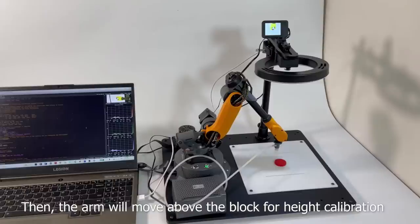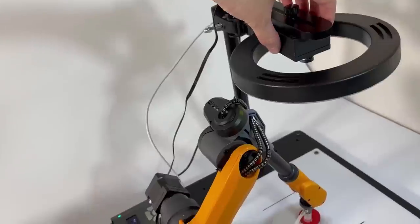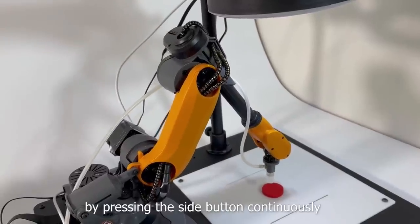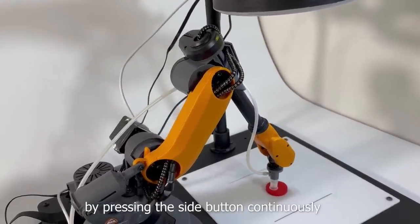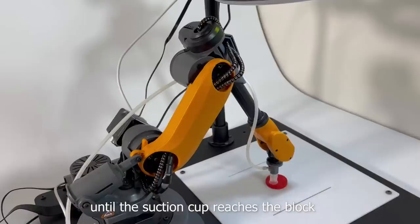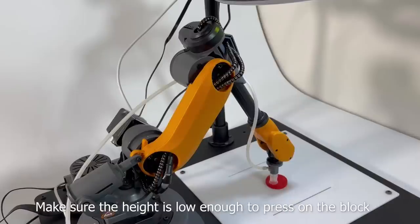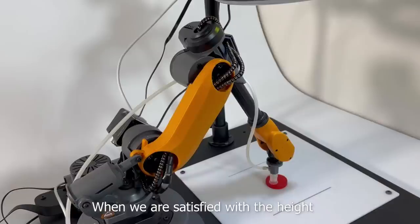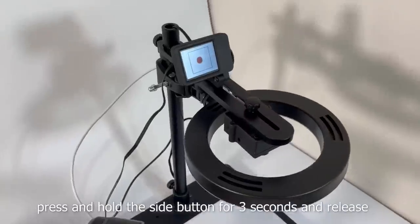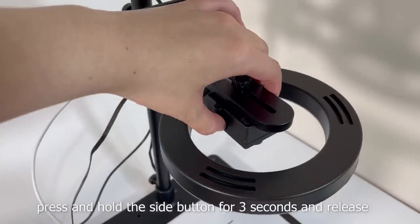Then, the arm will move above the block for height calibration. We decrease the height by pressing the side button continuously until the suction cup reaches the block. Make sure the height is low enough to press on the block. When we are satisfied with the height, press and hold the side button for 3 seconds and release.